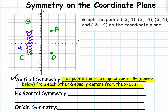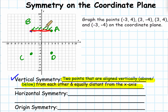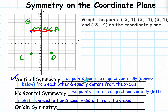Now let's look at the points B and A. I see that they line up horizontally. The distance from B to the y-axis is 3, and from A to the y-axis is 3 as well. That means they have what we call horizontal symmetry. To be horizontally symmetric, two points have to be aligned horizontally — left-right from each other — and equally distanced from the y-axis, because we can connect them with a horizontal line.